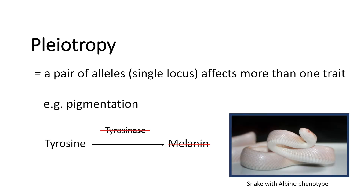But if the allele of tyrosinase is mutated, we don't have the melanin product anymore. Melanin plays a role not only in skin pigmentation — it also has an effect in eye pigmentation. We see this at the albino snake, for example.